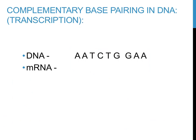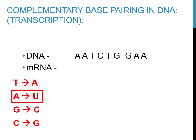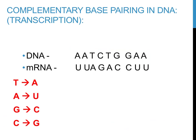Complementary base pairing for transcription, producing RNA instead of DNA, is quite similar to what we just discussed with replication. One notable difference in base pairing with RNA during transcription is that there is no T or thymine present. Instead of placing a complementary T, you would place a U for uracil instead. Note that everything looks similar, except for the box sections — for every A (adenine), there is a matching U for uracil instead of a T for thymine.